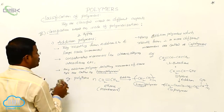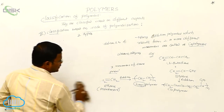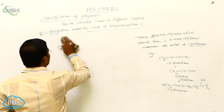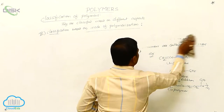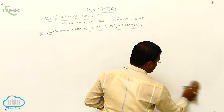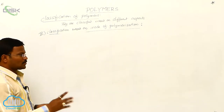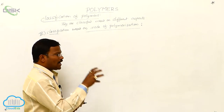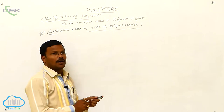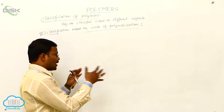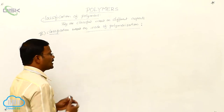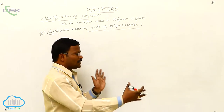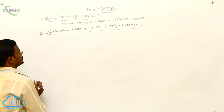Addition polymers are those resulting from the addition reaction of unsaturated monomers. Based on the monomers involved, addition polymers are of two types: homopolymers and copolymers. Homopolymers result from similar type of monomers, whereas copolymers result from two or more different types of monomers combined through addition.